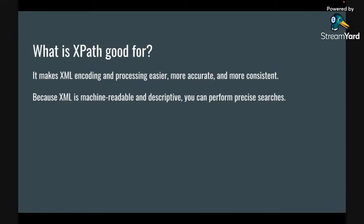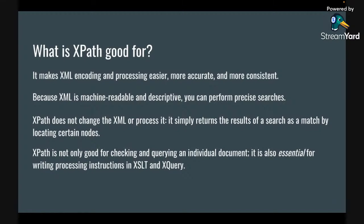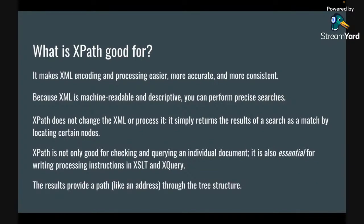Because XML is machine readable and descriptive, you can perform really precise searches. An important point: XPath does not change the XML that you're querying, and it doesn't process it. It just returns the results of a search that might contain a path location, a number, a Boolean value — true or false — or the contents of a node. It might look like you're changing the XML, but you're not. You're using XPath to simply return the results of a particular search. XPath is essential for writing any processing instructions, whether XSLT or XQuery.